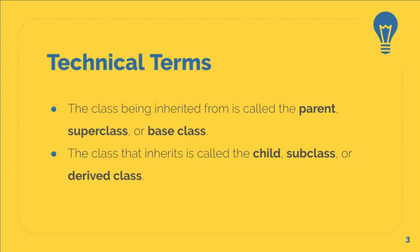All those words should make sense. The parent in the sense that a parent gives birth to the child. The super class in the sense that super means above — just like Superman flies above the crowd, the super class indicates the class that is above the other one. And the base class means the class from which everything else begins. The class that does the inheriting is called the child, the subclass, or the derived class.